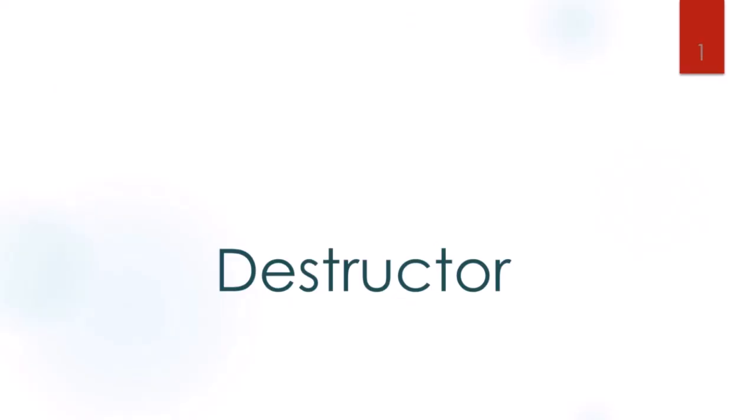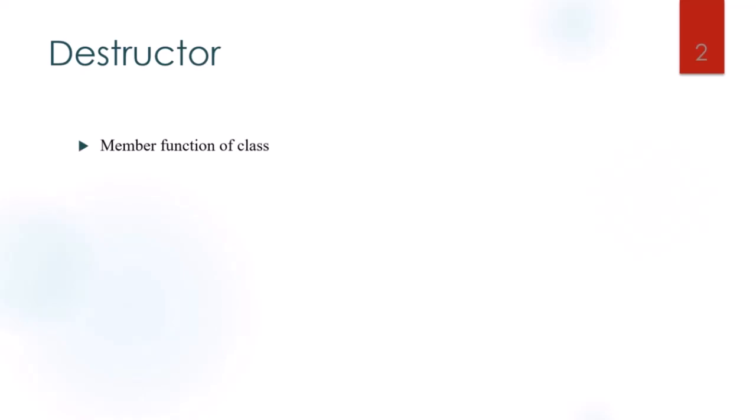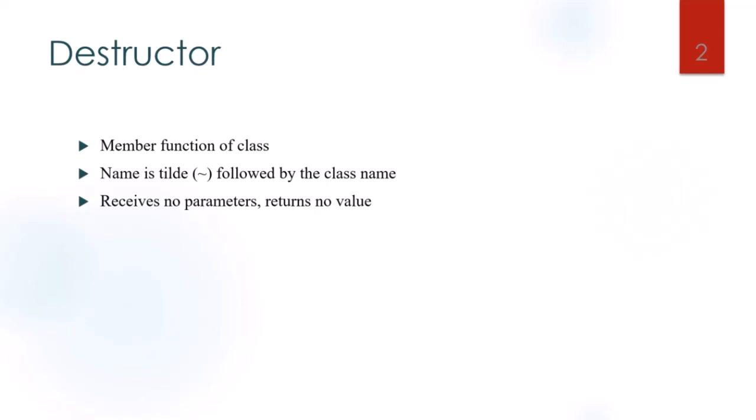Now we need to see the destructor. The destructor is a member function of a class. Its name is the tilde (~) operator followed by the class name. We use the destructor to destroy the objects that have been created by the constructor. It receives no parameters and does not return any value. Importantly, there is only one destructor per class — no overloading is allowed.